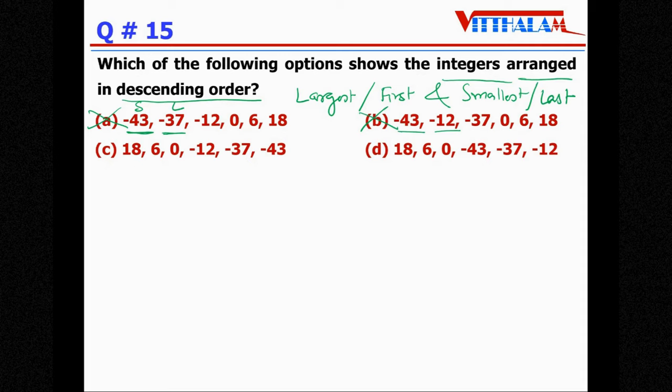Let's see for c, 18 that is the largest, 6 smaller one, 0 another smaller one, minus 12 another smaller one, minus 37 is smaller than minus 12 and minus 43 is the smallest so c is the answer. Let's check for d, 18 larger 6 smaller, but this is greater than minus 43 so it is not in the order, not the answer.